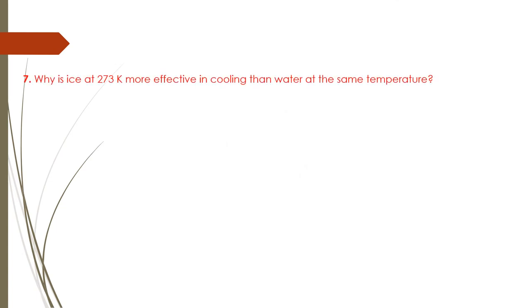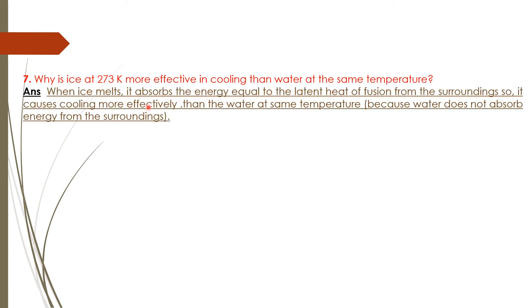Question 7: Why is ice at 273 Kelvin more effective in cooling than water at the same temperature? Answer: When ice melts—ice is solid—it absorbs energy equal to the latent heat of fusion from the surroundings. So it causes cooling more effectively than water at the same temperature. This is because water, which is liquid, does not absorb energy from the surrounding.